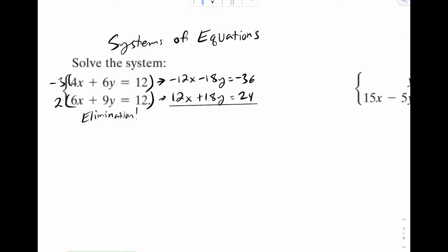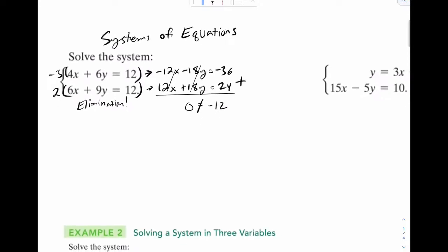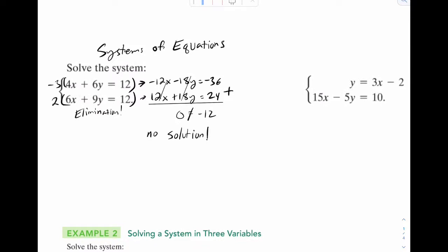And in elimination, we're just trying to eliminate one of these variables. But notice how in this case, they both actually cancel. So when I add these, I get zero is equal to negative 12, which I know is not true. So in this situation, we would say there's no solution to the system, which is interesting because most times we actually do get a solution.